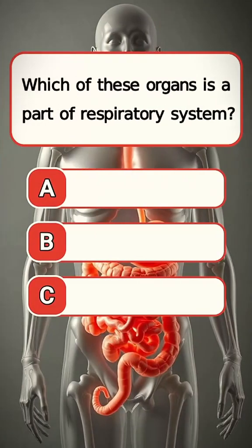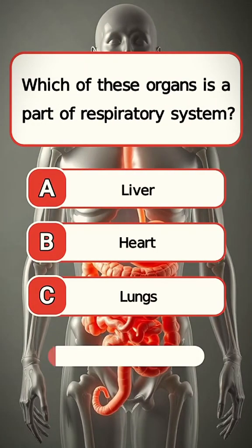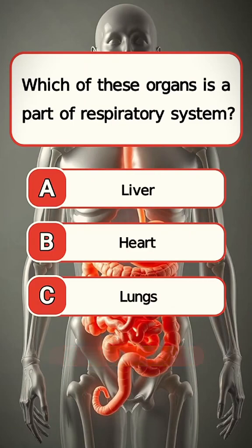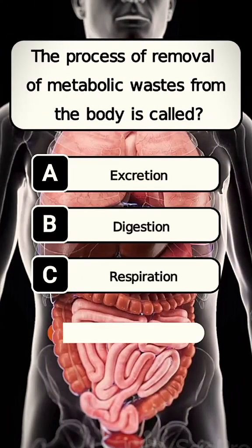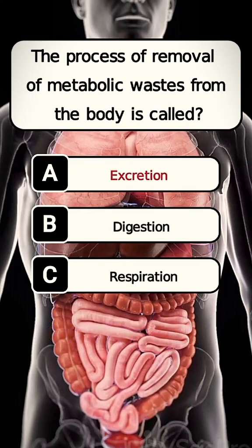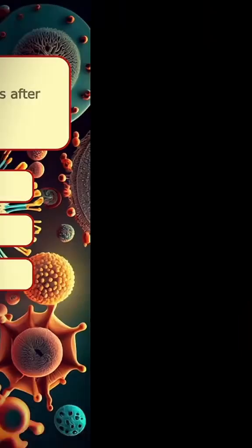Which of these organs is a part of the respiratory system? Answer C. Lung. The process of removal of metabolic wastes from the body is called? Answer A. Excretion.